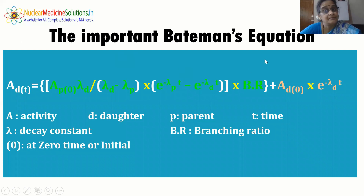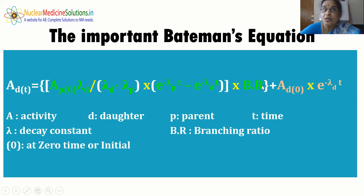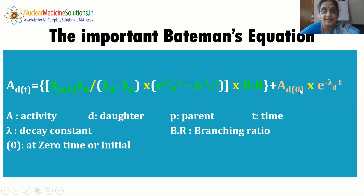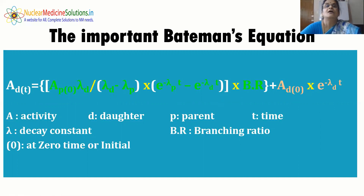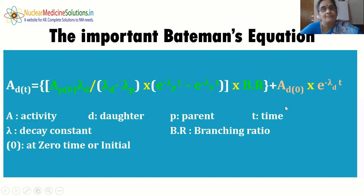The important final Bateman's equation is: A_D(t) = A_{P0} · [λ_D / (λ_D − λ_P)] · [e^(−λ_P·t) − e^(−λ_D·t)] · BR + A_{D0}·e^(−λ_D·t). This equation is used to determine the radioactivity yield from generators over a particular time, find the time of maximum yield, and determine when equilibrium will be re-established.